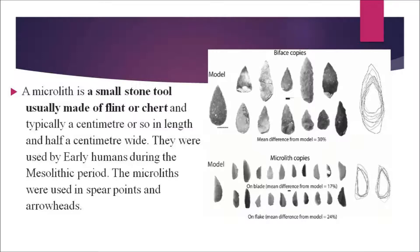A microlith is a small stone tool, usually made of flint, typically about a centimeter in length and half a centimeter wide. They were used by early humans during the Mesolithic period. Microliths were used in spear points and arrowheads. You can see in the picture what a microlith looks like and the shapes used.